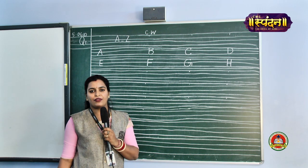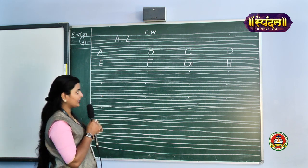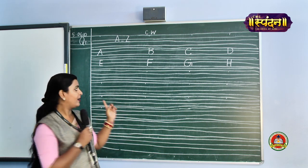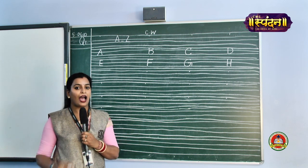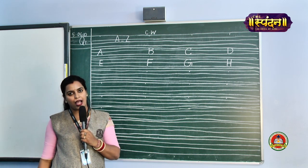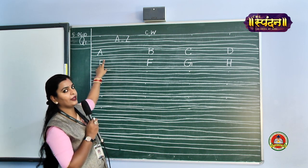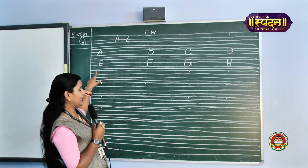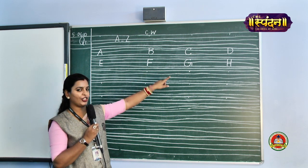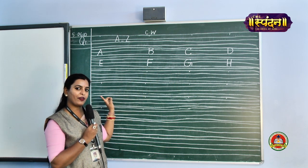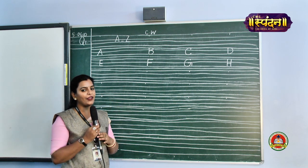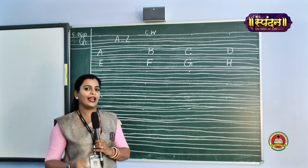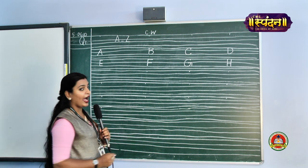Next we have alphabet I. We come to the third line. Keep in mind, only four alphabets in one line. What comes after H? I. Repeat after me: A, B, C, D, E, F, G, H. Next alphabet is I. I for ice cream, I for igloo, I is for inkpot too. Start from the pink line, bring it to the black line and make two slanting lines. This is alphabet I.